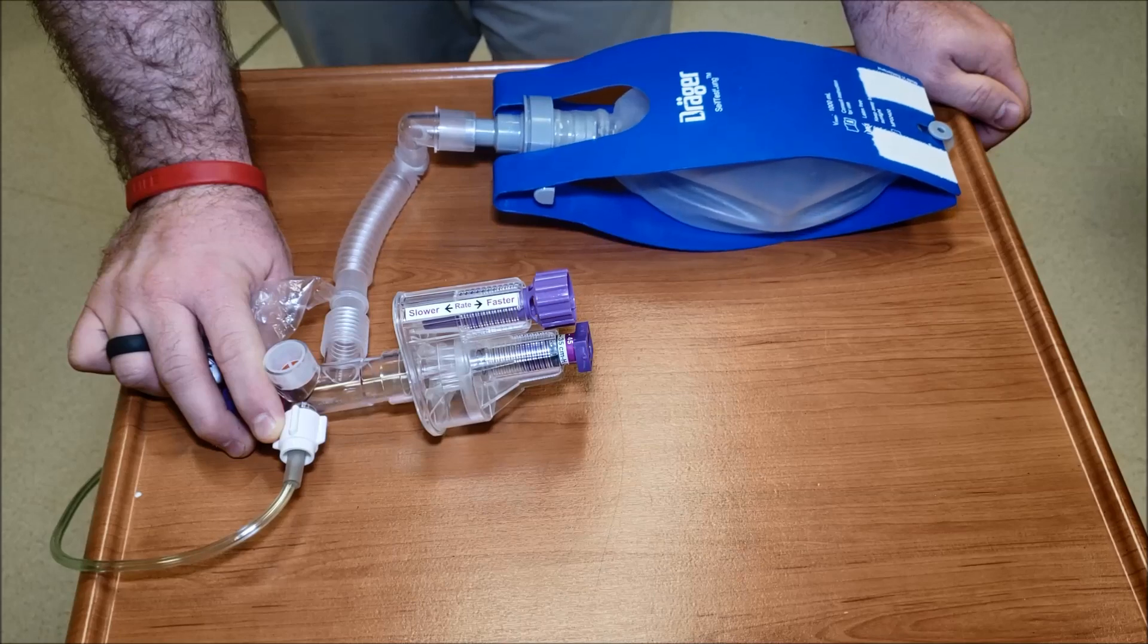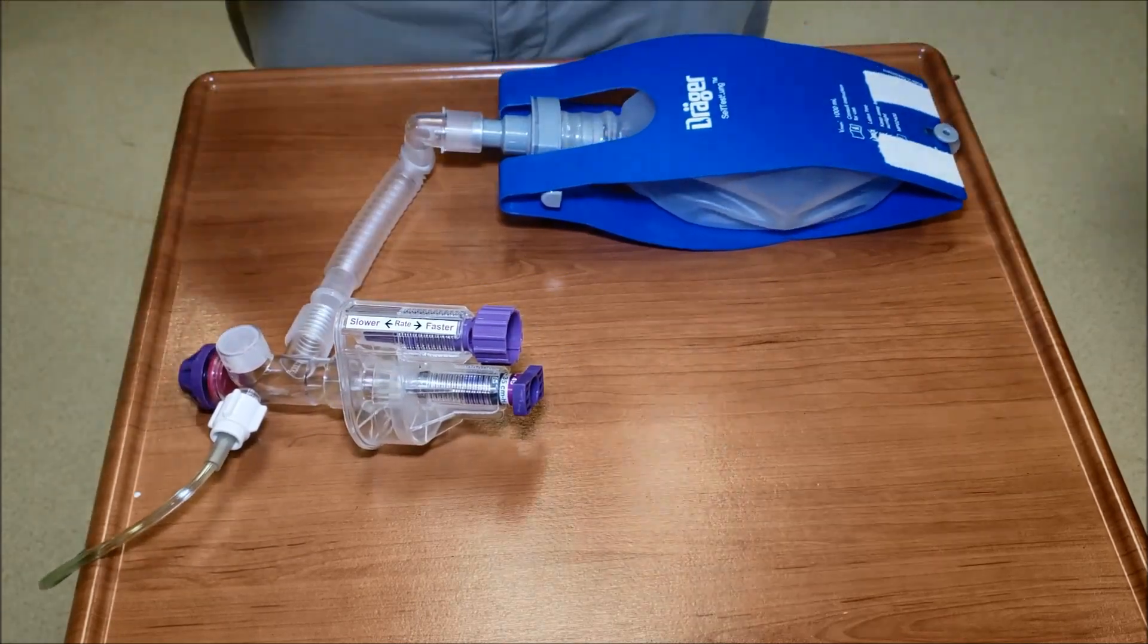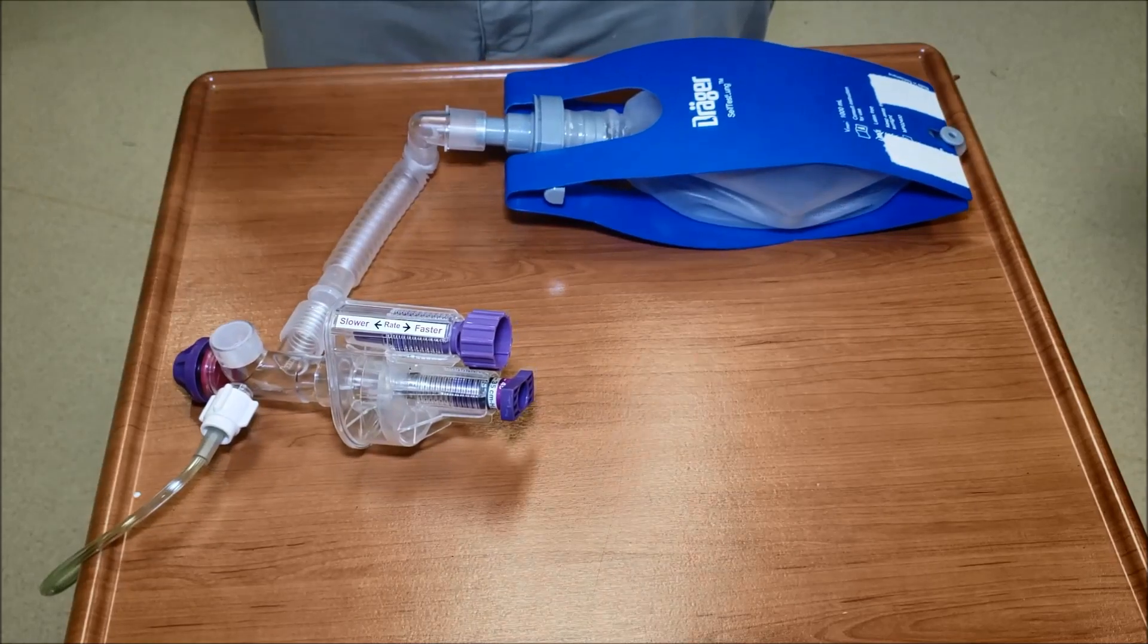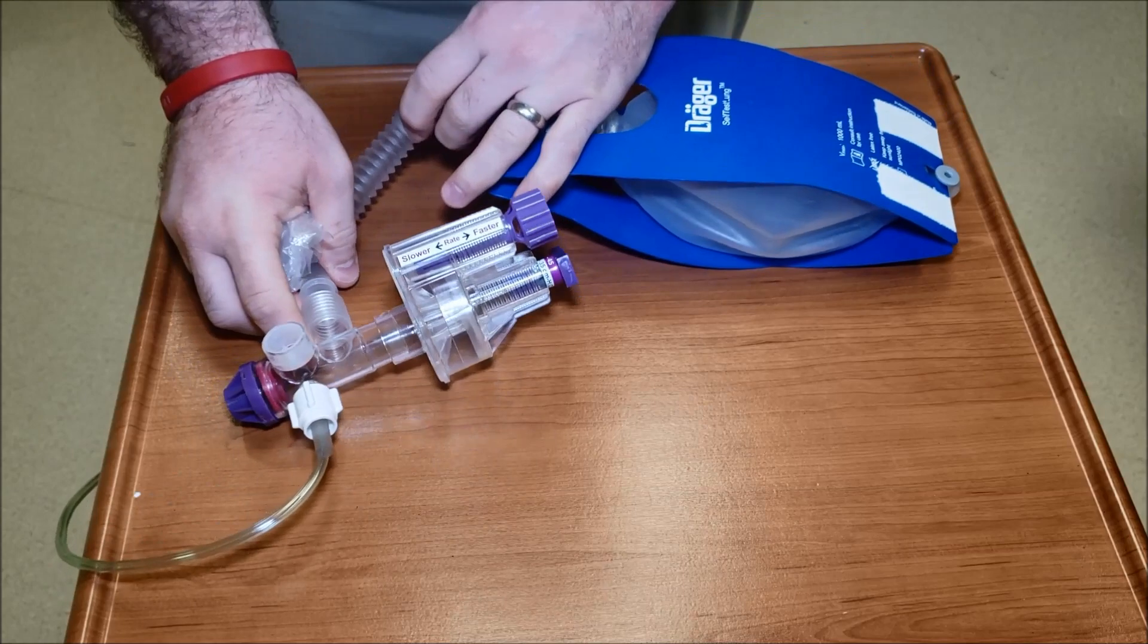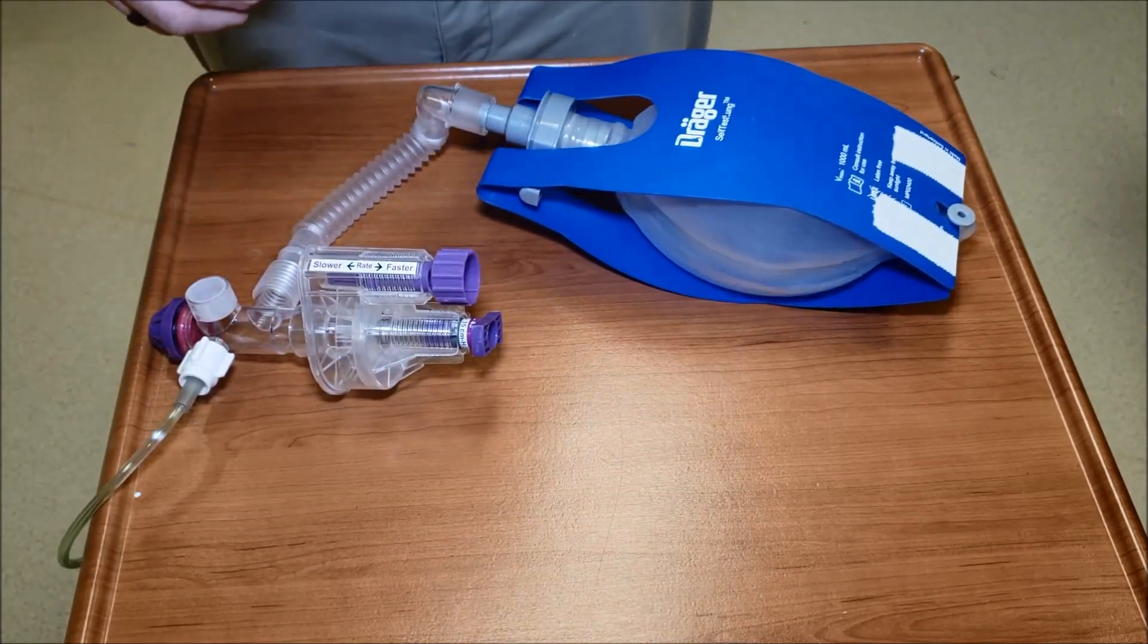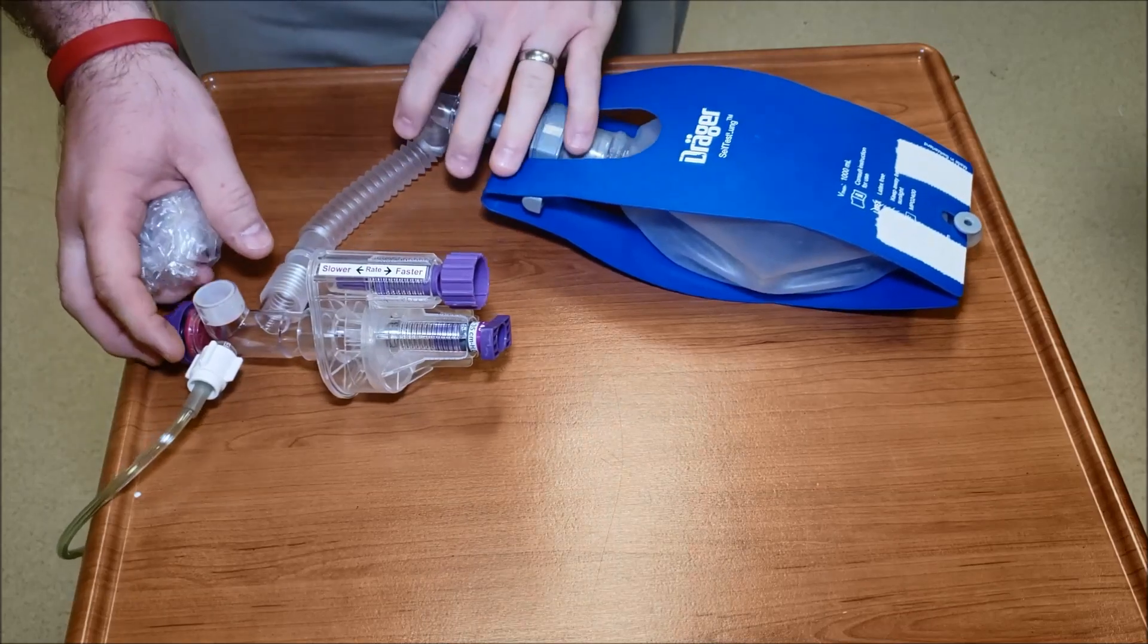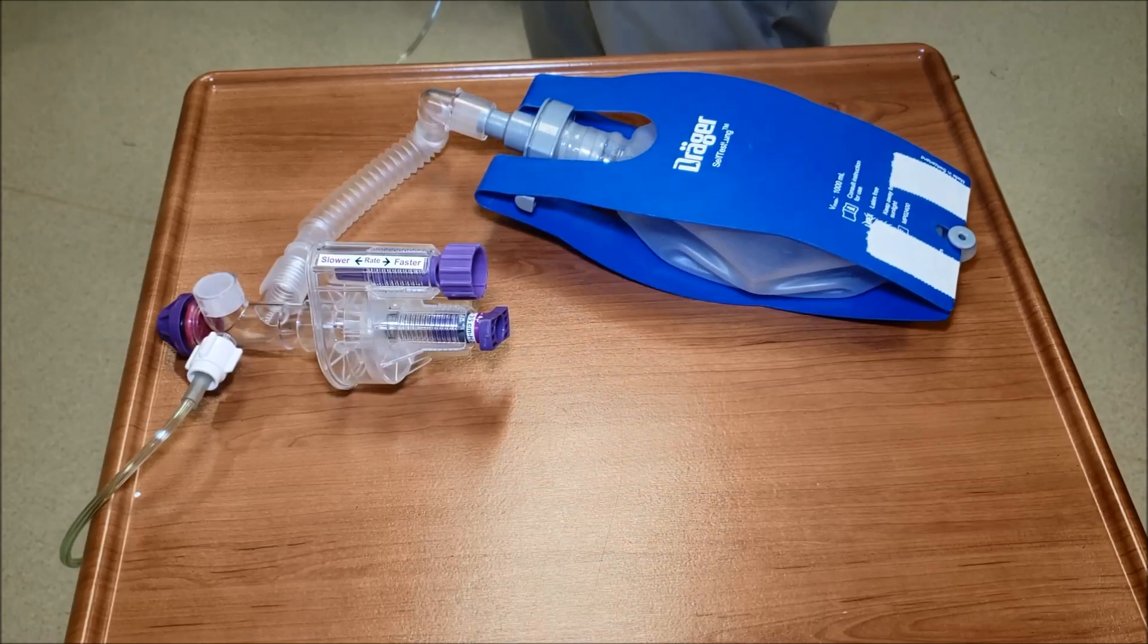The problem right now is that our flow coming in is really low because I don't have the flow meter cranked up back there. So this would be a great, very similar like an IMV rate, a breath every six seconds, ten breaths per minute.